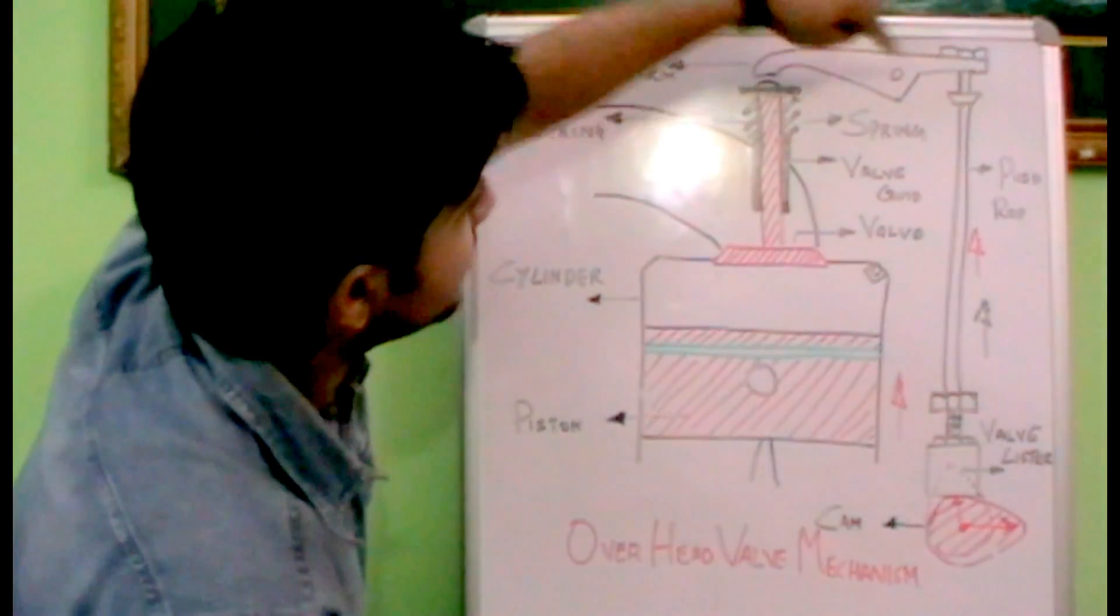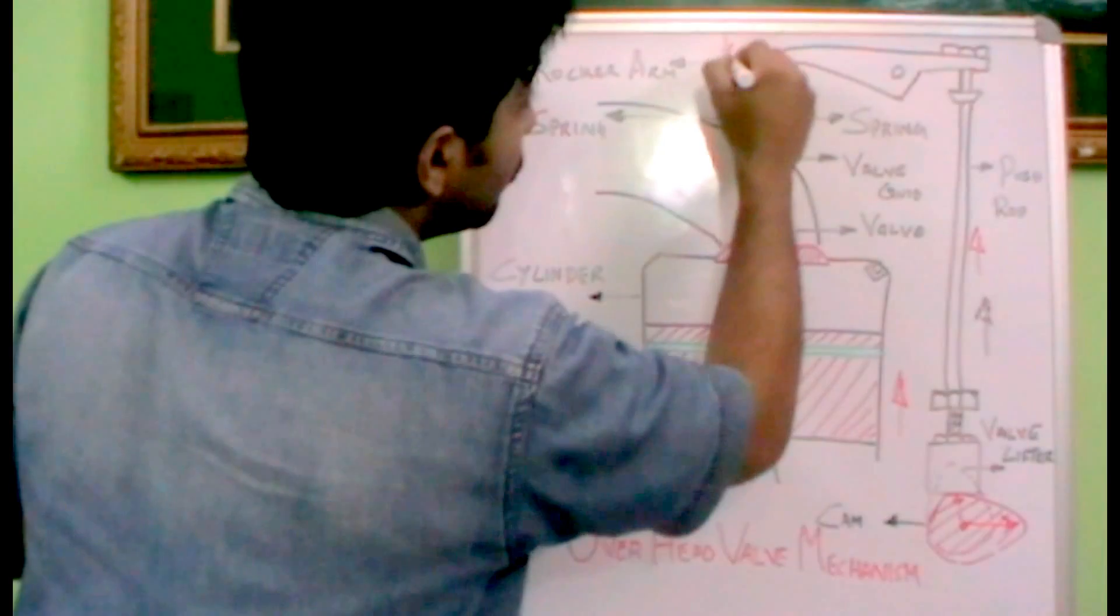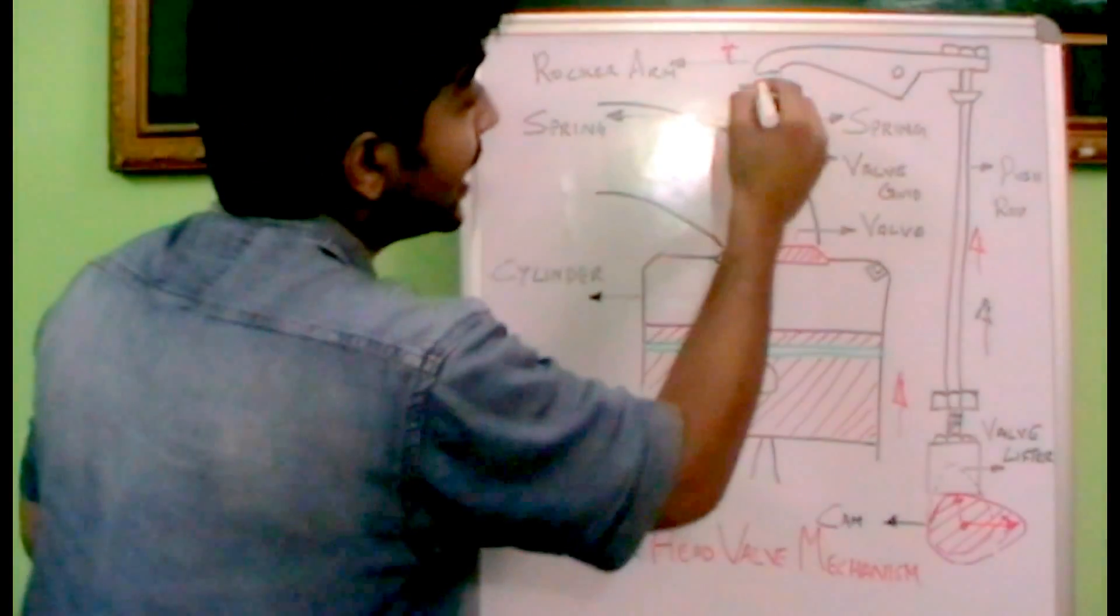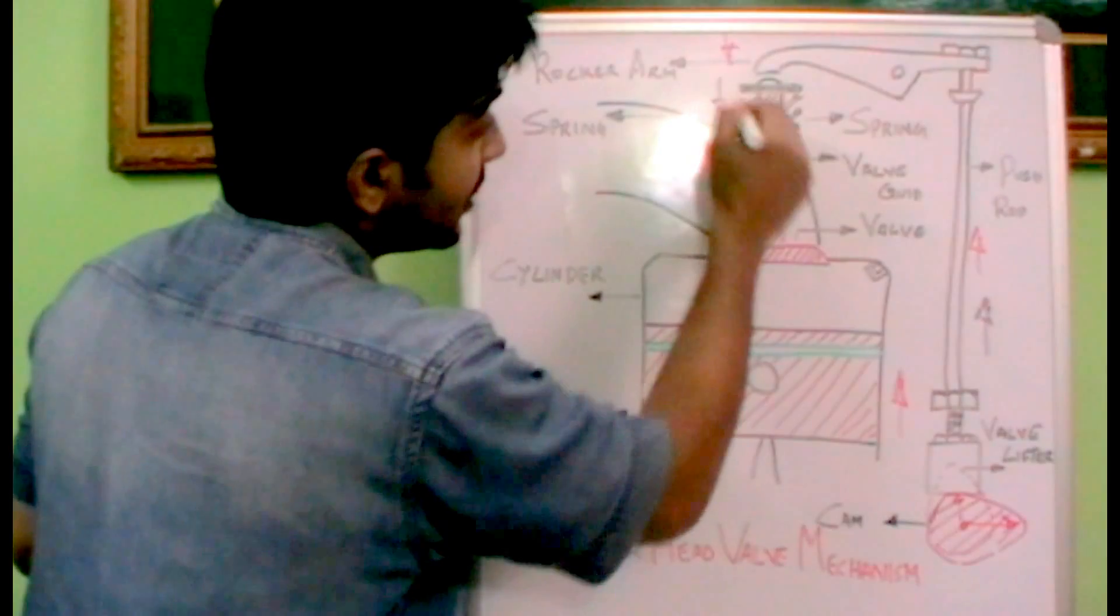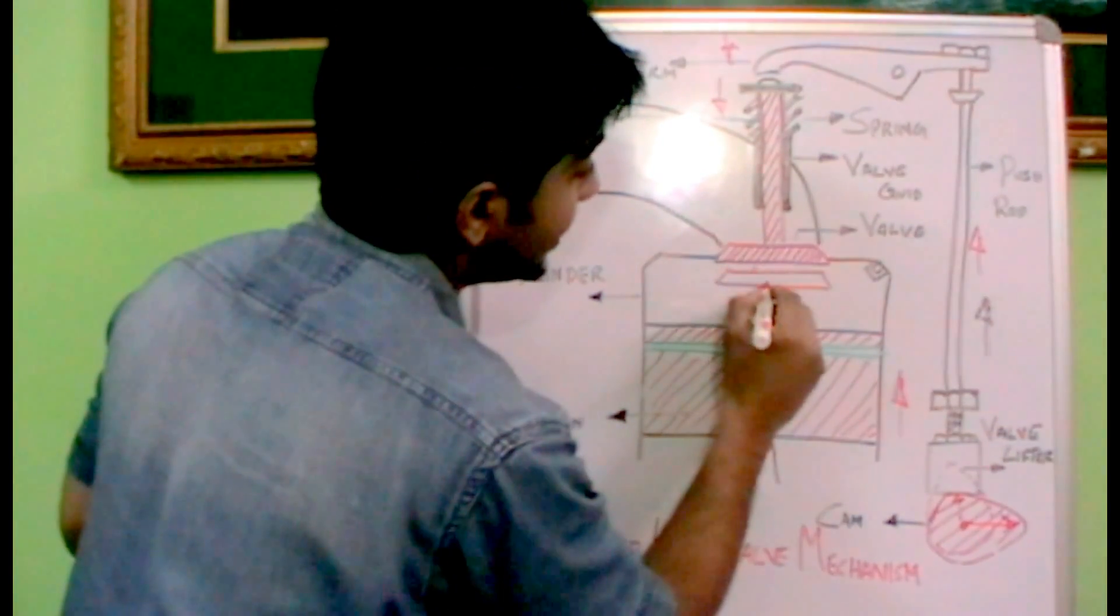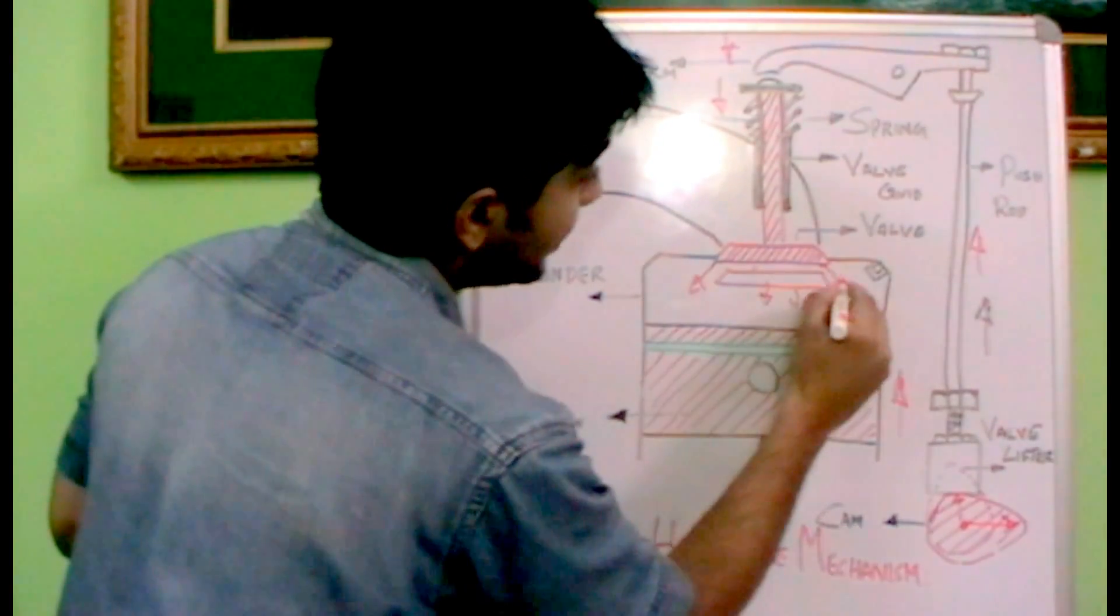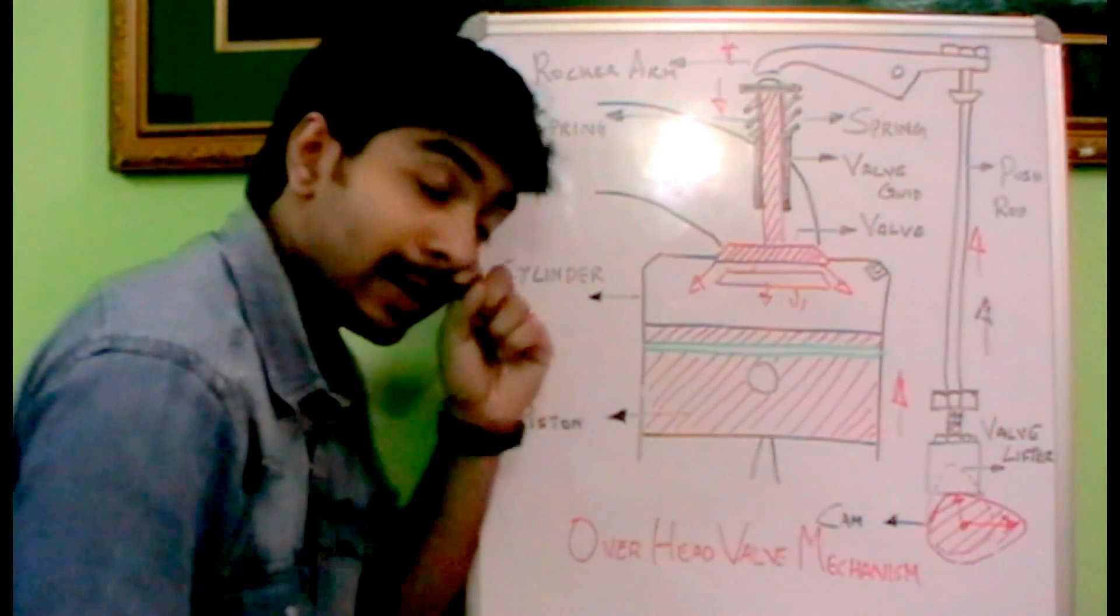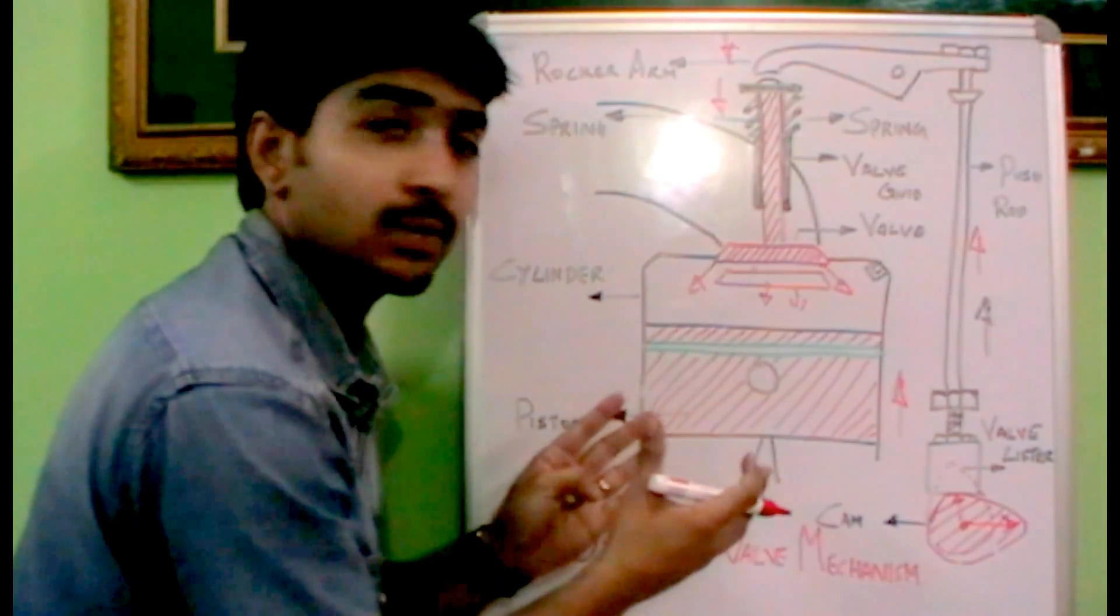So as the push rod moves up, the rocker arm moves. So when the push rod moves up, the rocker arm will tend to move down. So it will result in the rocker arm to hit the valve. So the rocker arm will push this valve down inside towards the cylinder. So it results in an opening over here, which allows the fuel to come in.